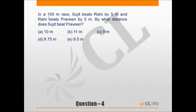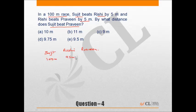Question 4: In a 100-meter race, Sujir beats Rishi by 5 meters and Rishi beats Praveen by 5 meters. By what distance does Sujir beat Praveen? When Sujir runs 100 meters, Rishi runs 95 meters. Similarly, when Rishi runs 100 meters, Praveen runs 95 meters. So when Rishi has done 95 meters, Praveen does only 95% of that.